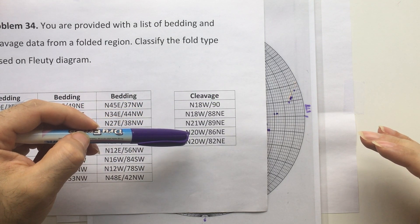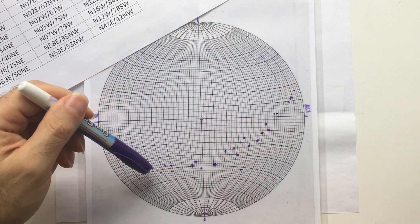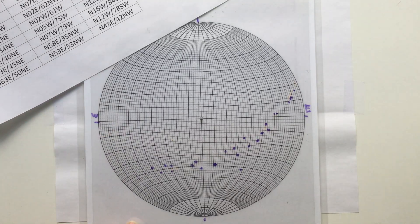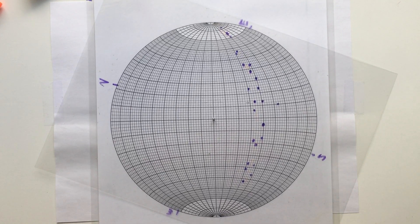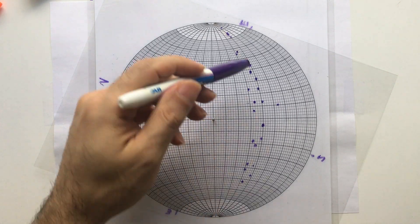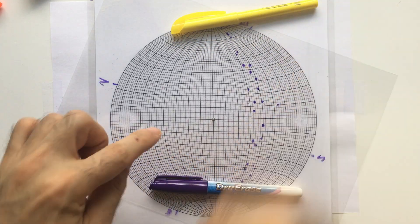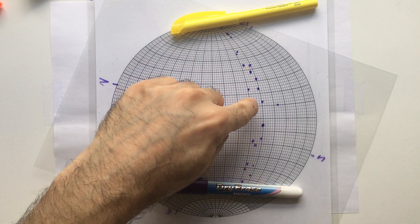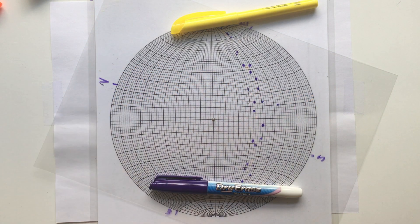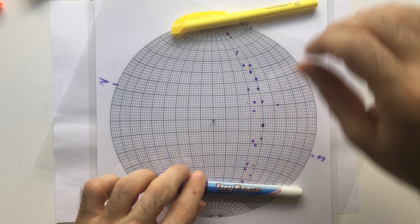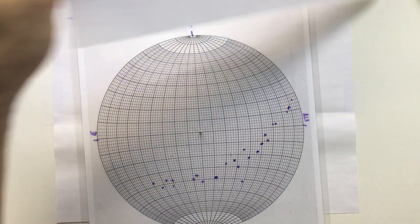What we're going to do is plot the cleavage, and then I'll tell you how we can use the cleavage information rather than finding the central point of this data distribution. In problem 34, you drew the best great circle through the bedding poles, counted the angle between the two ends to find the central point, and used that for the axial surface. Now let's see how to deal with this when you have cleavage.